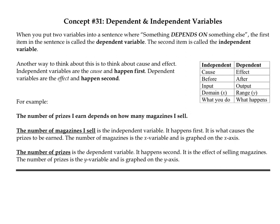If we're talking about the prizes that you earn because of the magazines that you sell, the number of prizes you earn will depend on how many magazines you sell. So prizes happens to be your dependent variable, which falls on the y-axis, and your independent variable is the number of magazines you sell, which falls on the x-axis. So dependent depends on independent — you're putting it in y, then x.